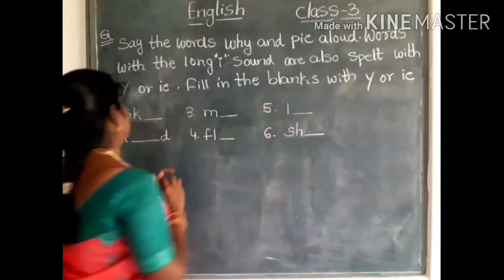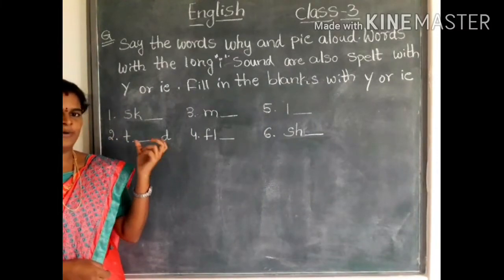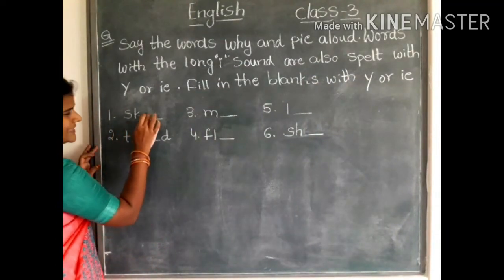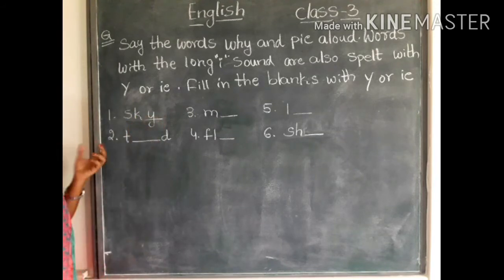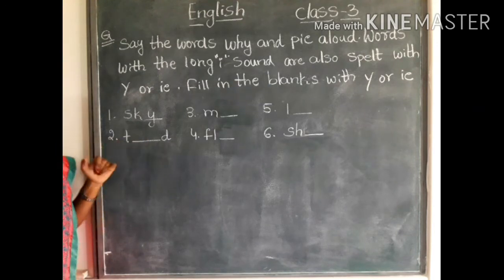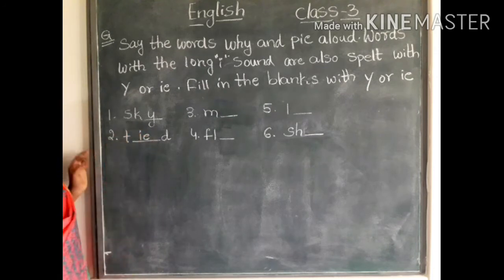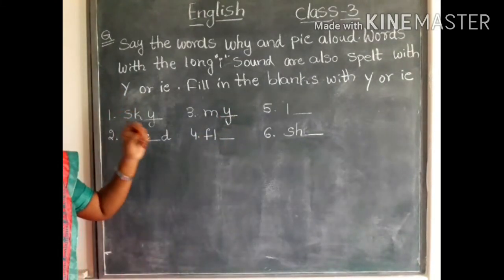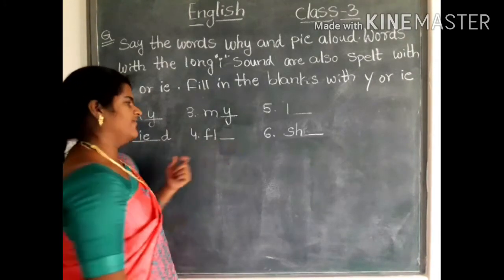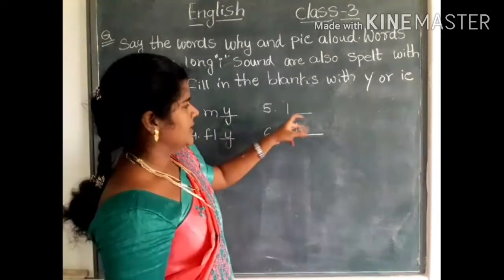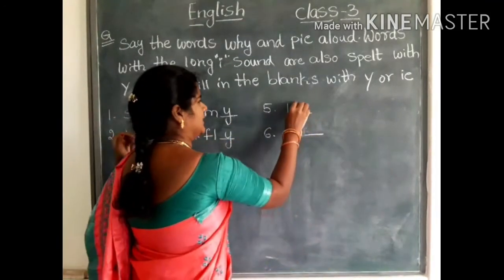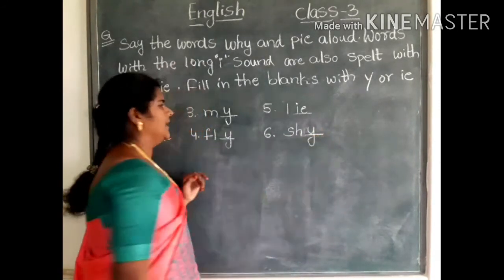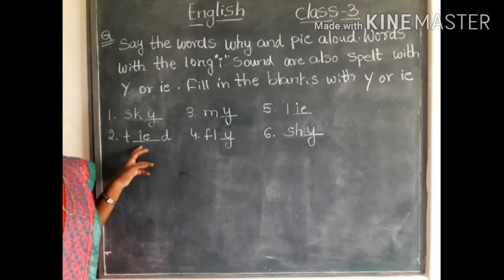Fill in the blanks with Y or IE to get the long I sound. Here you have six words to complete. First one: sky — S-K-Y. Second one: tide — T-I-D-E — tide with IE. Third one: my — M-Y — my, with long I sound. Fourth one: fly — F-L-Y. Fifth one: lie — L-I-E — lie. Sixth one: shy — S-H-Y. By using Y or IE to get the long I sound, children.